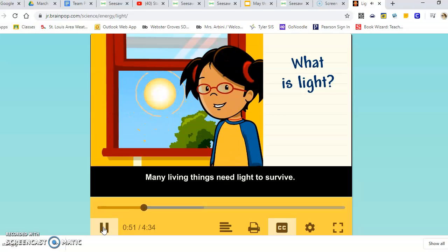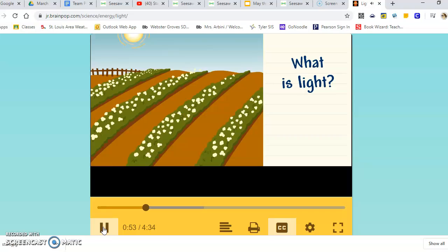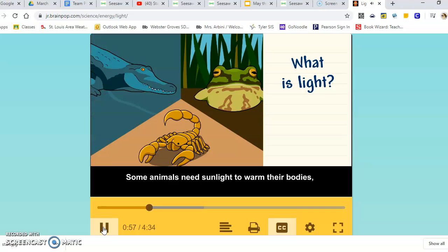Many living things need light to survive. Plants use light to make their own food. Some animals need sunlight to warm their bodies.